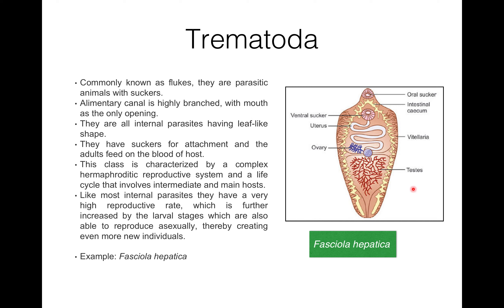This is an example of Trematoda — Fasciola hepatica. Here you can see the oral sucker and ventral sucker. The uterus, ovary, testes, and vitellaria are also present. In Trematoda, the alimentary canal is highly branched with the mouth as the only opening.